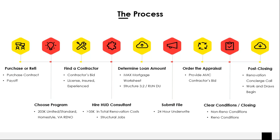Next, we'll help you determine the loan amount using an Excel sheet called the Maximum Mortgage Worksheet. We plug in the repair amounts, fees, purchase price or payoff, and out comes your loan amount — and we can help you with that. Then we'll structure the 3.2, run DU, get that approved eligible, and submit the file. This is really cool and basically unheard of: we will produce a 24-hour initial underwrite on any renovation loan we do here at Remen Wholesale — and that's not just renovation loans. We do that on all our loans. Any loan, any time of year, we're doing a 24-hour initial underwrite.